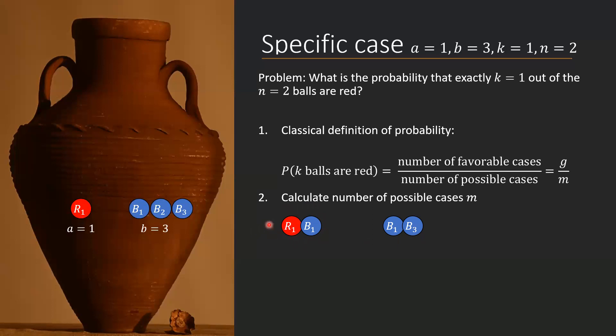There are six possible cases. If we have the red ball being picked, we have three different options for the blue ball. And in the case where both balls are blue, we also have three different options. So m equals 6.